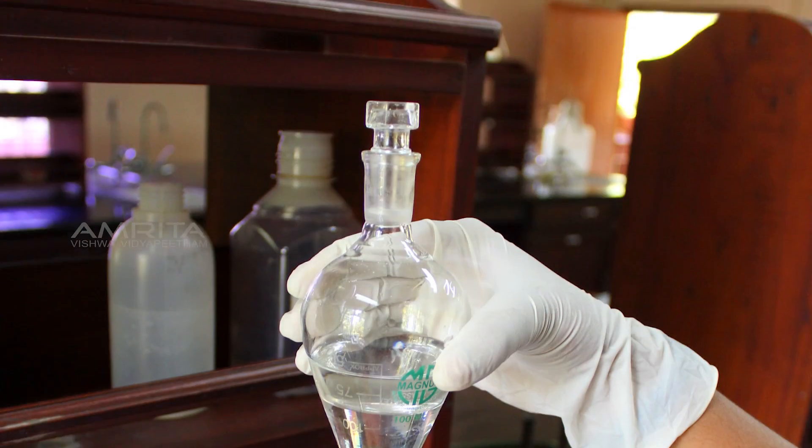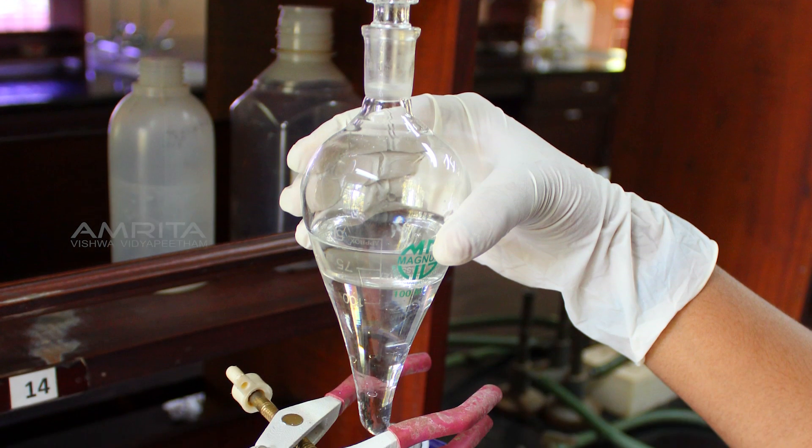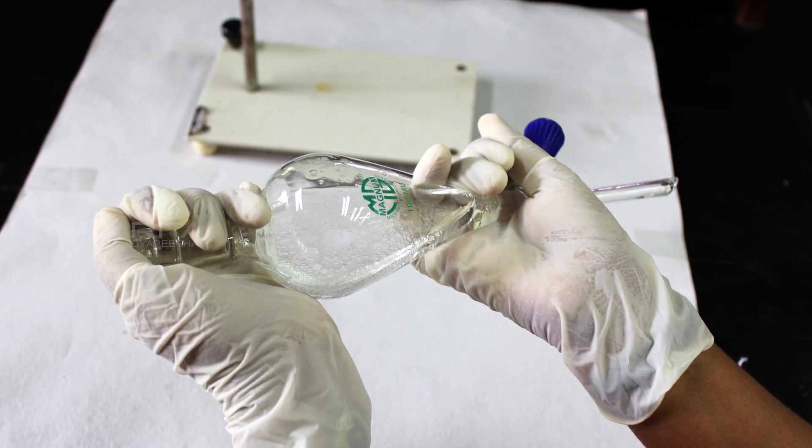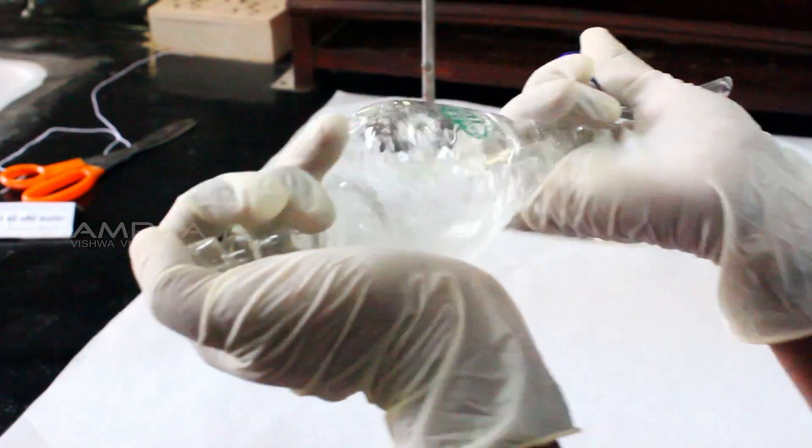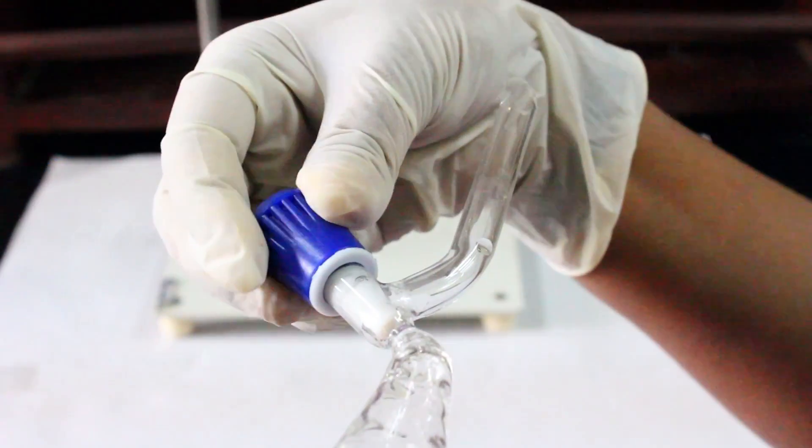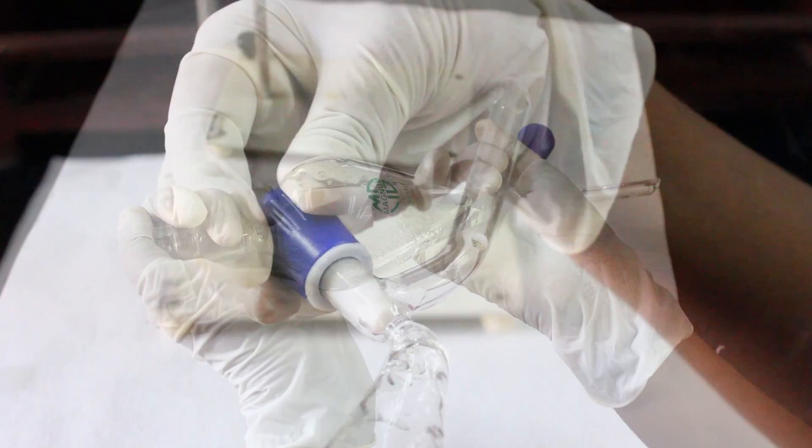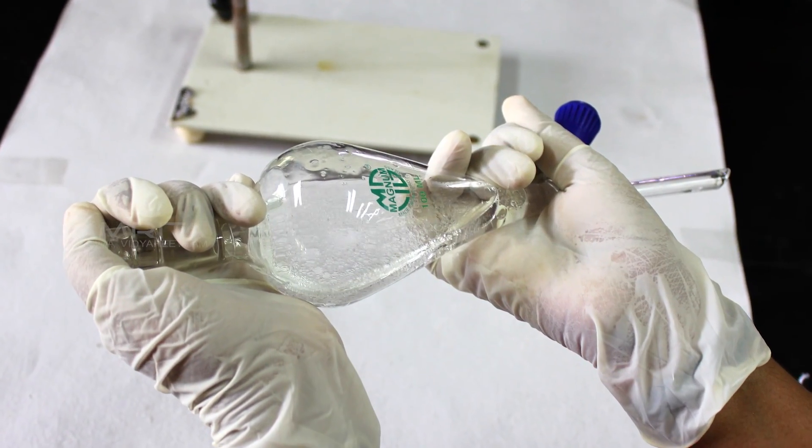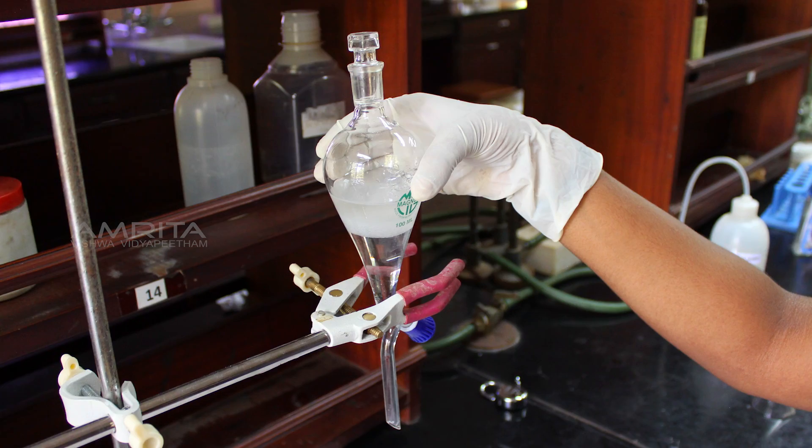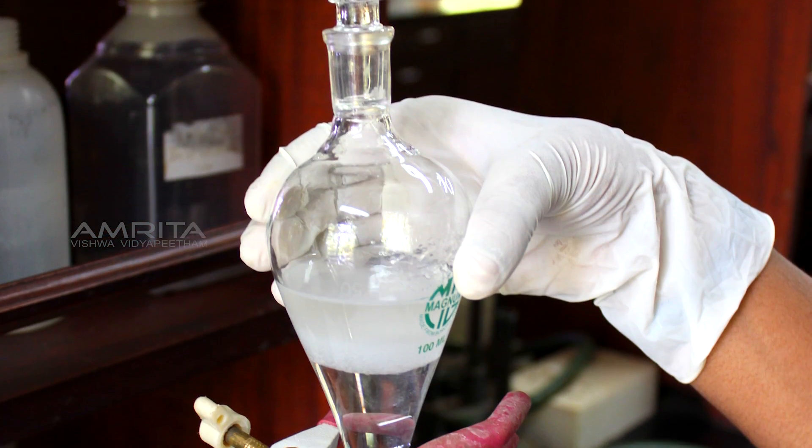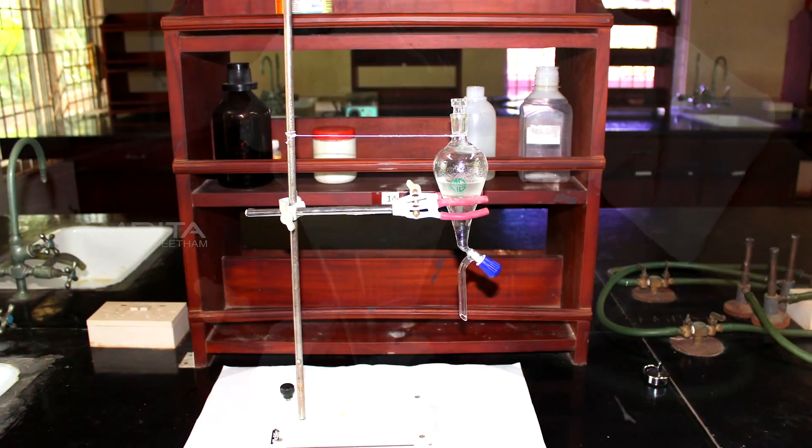Now take the separating funnel from the stand. Invert the funnel and shake it gently, and slowly open the stop cock of the funnel to release the pressure inside the funnel. Again, place the separating funnel in the stand and allow the two liquids to separate completely.